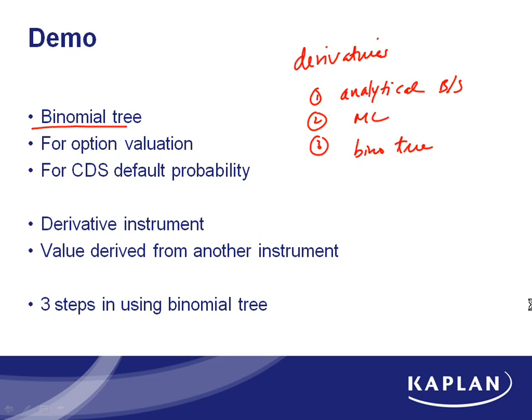The binomial tree is used very often — it's very computer-programming friendly, so it's easy to program to do many things which other methods cannot. Most people, including myself, use this for pricing and simulations at work. There are only three steps for the binomial tree; it's pretty easy once you set it up.